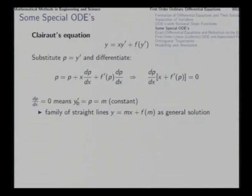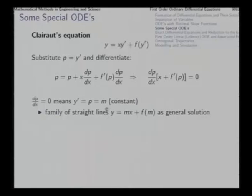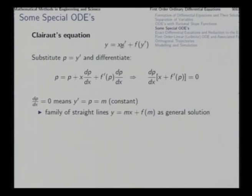If p = dy/dx is constant, then y is a linear function of x. Integrating, y = mx + something, and since m = y' = p, we know the something must be f(m). So y = mx + f(m) is the general solution of Clairaut's equation — a family of straight lines parameterized by m.